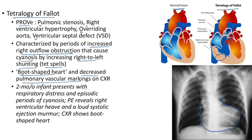Clinical case of tetralogy of Fallot: two-month-old infant presents with respiratory distress and episodic periods of cyanosis (tet spells) due to right-to-left shunt. Physical examination reveals right ventricular heave and a loud systolic ejection murmur due to pulmonary stenosis. Chest X-ray shows boot-shaped heart.